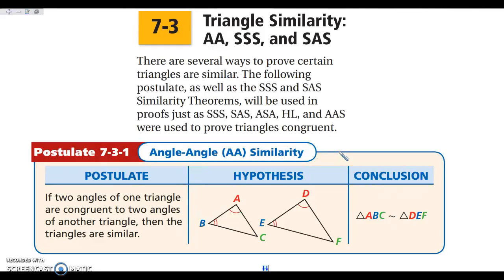In section 7-1 we said that in order to prove figures are similar, we had to know all the pairs of sides were proportional and all the pairs of angles were congruent. Now we're going to get some shortcuts, and if we look at our title — angle-angle, side-side-side, and side-angle-side — some of those shortcuts are going to be very similar to what we had when we talked about congruence.